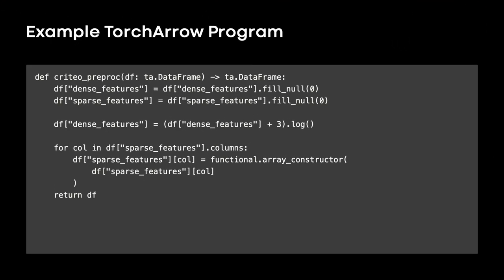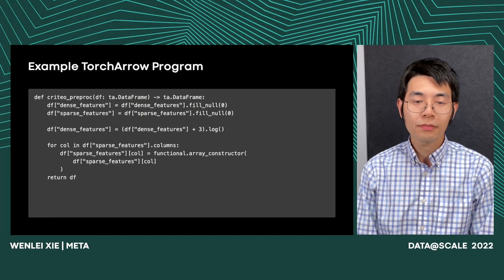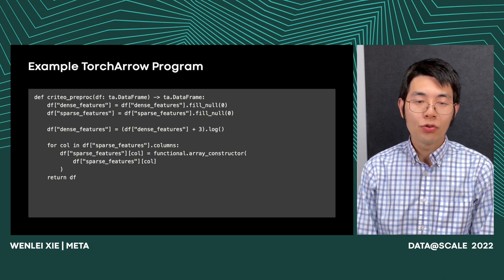Here is how this preprocessing logic is expressed in TorchArrow. We write a Criteo preprocessing function which takes a DataFrame as input and returns a DataFrame as output. For the fill-null operations in the first two lines, the nested structure is modeled as a nested DataFrame in TorchArrow, which allows automatic broadcast behavior — instead of looping over all subfields, you write one line and the operation broadcasts to all sub-columns. Similarly, applying the plus-3 and log operation is also automatically broadcasted. Finally, to apply the sparse feature transformations, you loop over the subfields and apply a UDF called array constructor, which wraps one element into a single-element array. More complicated UDFs can be called in the same way.